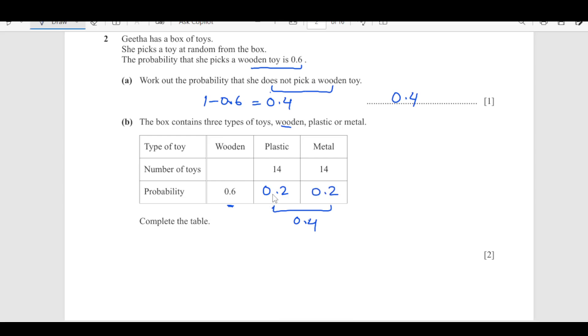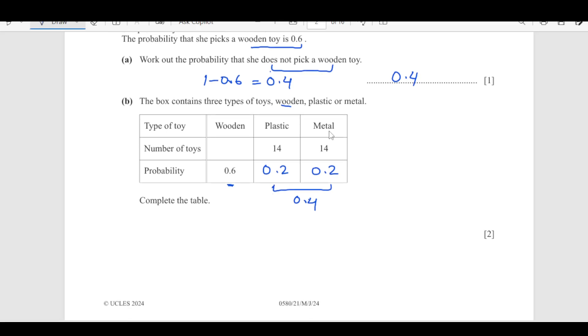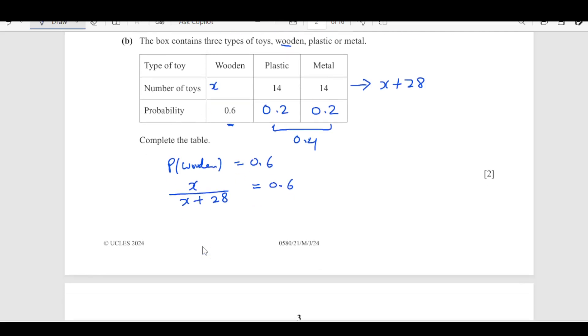We have filled two of the blank spaces here. We are left with number of toys of the wooden. So, let's say this is x. It is going to be total number of toys is x plus 14 plus 14 that is 28. And then the probability of wooden is 0.6, and this is x over the total, x plus 28, and we have this equal to 0.6. So, we are just going to simplify this.